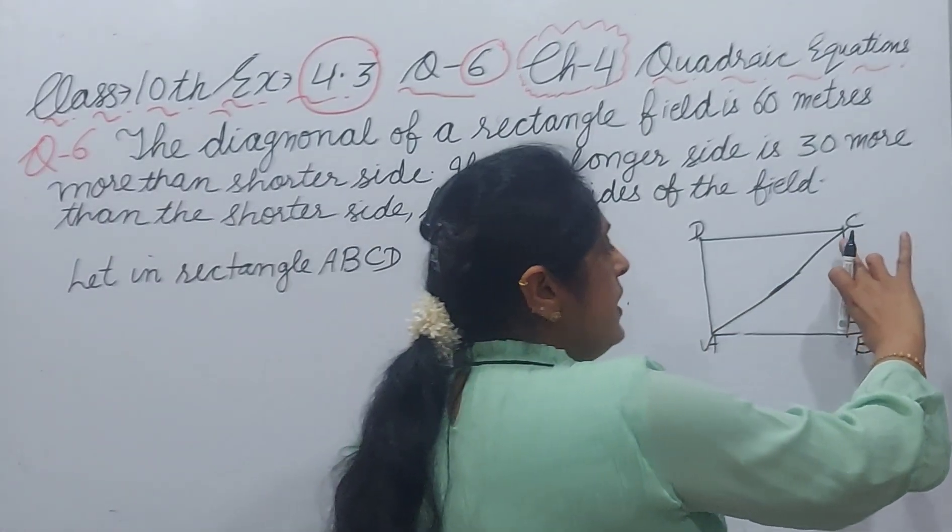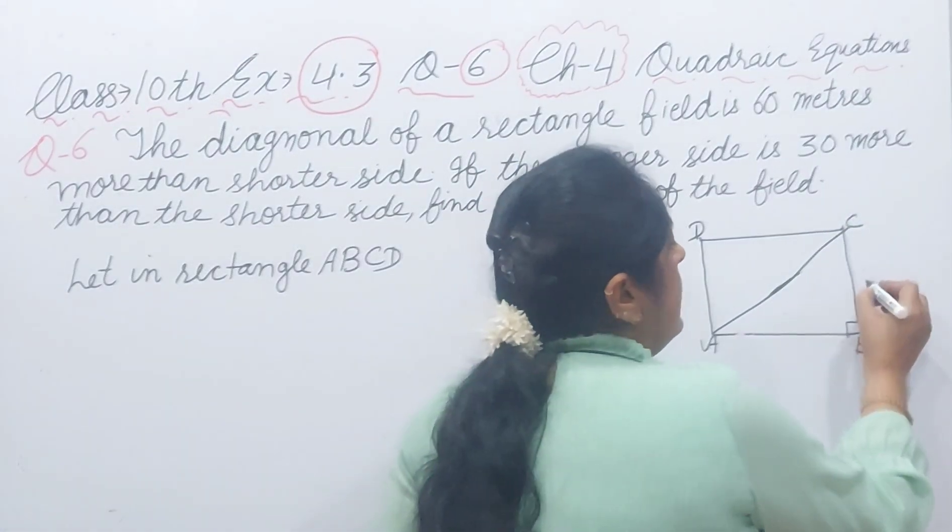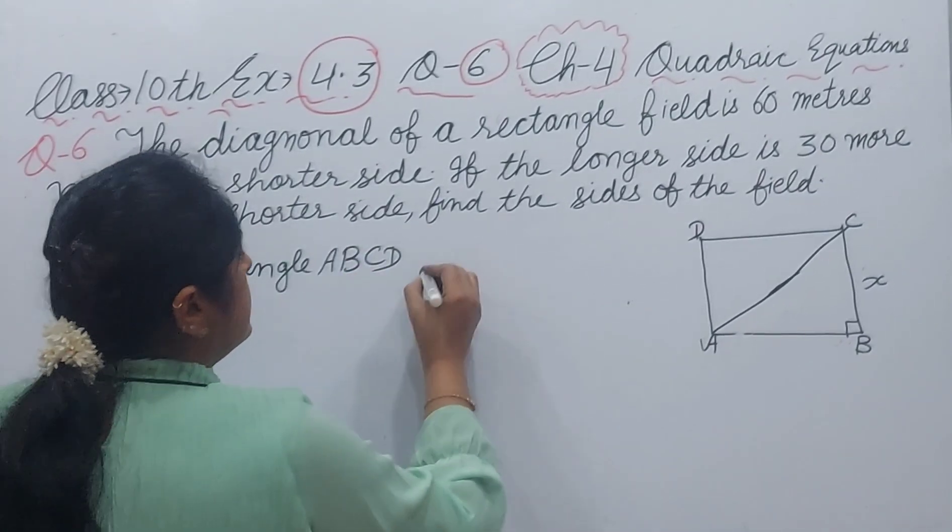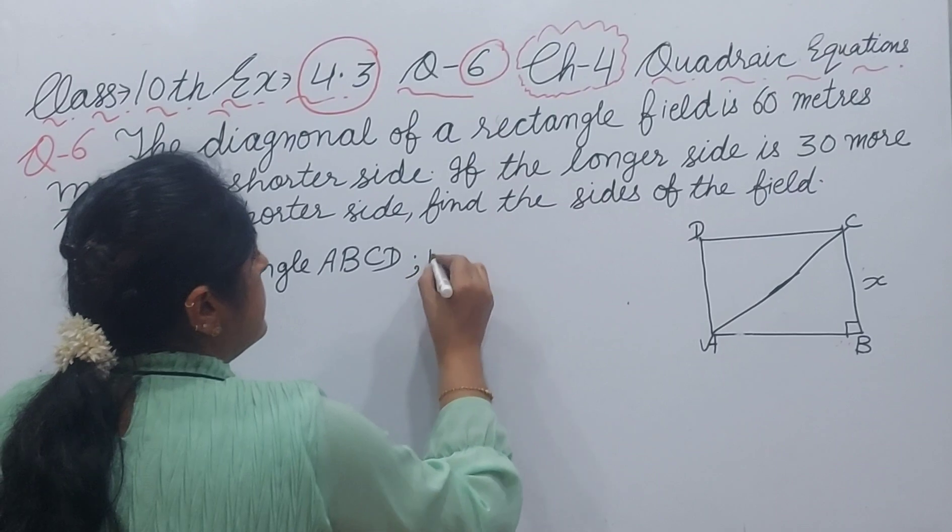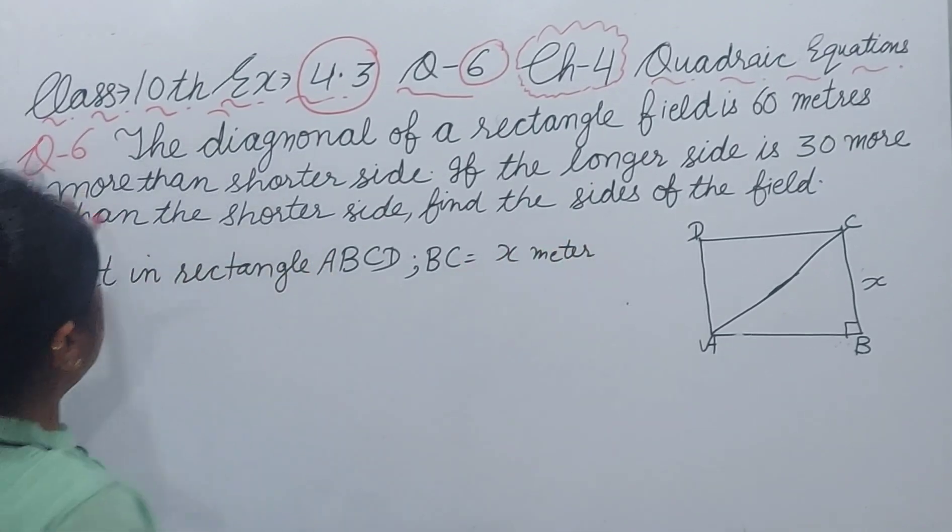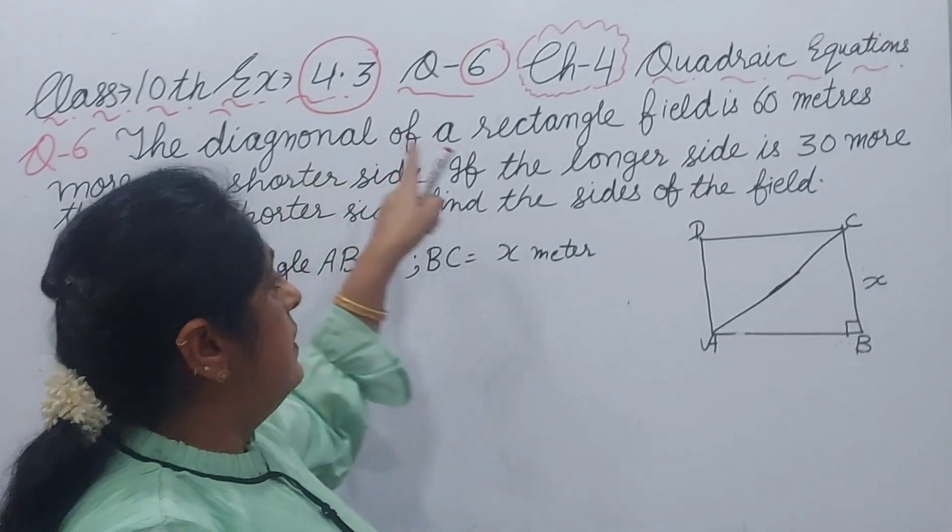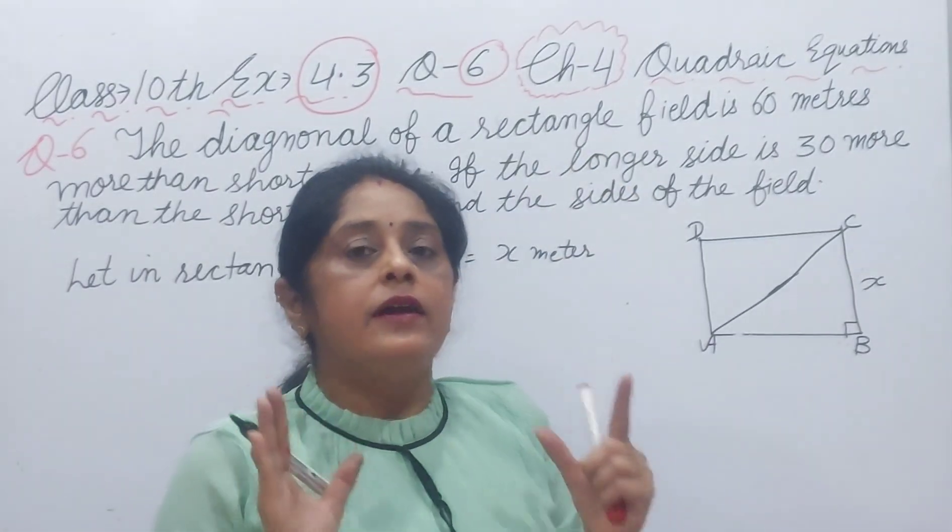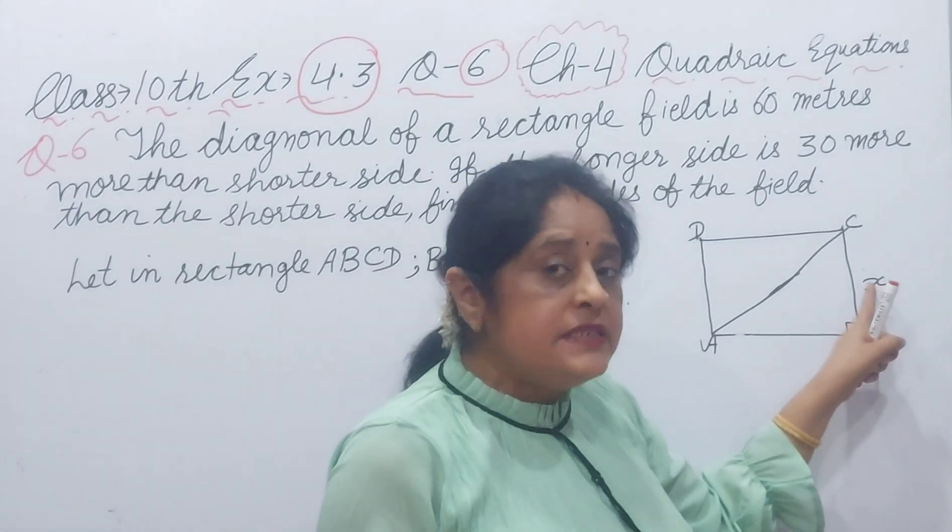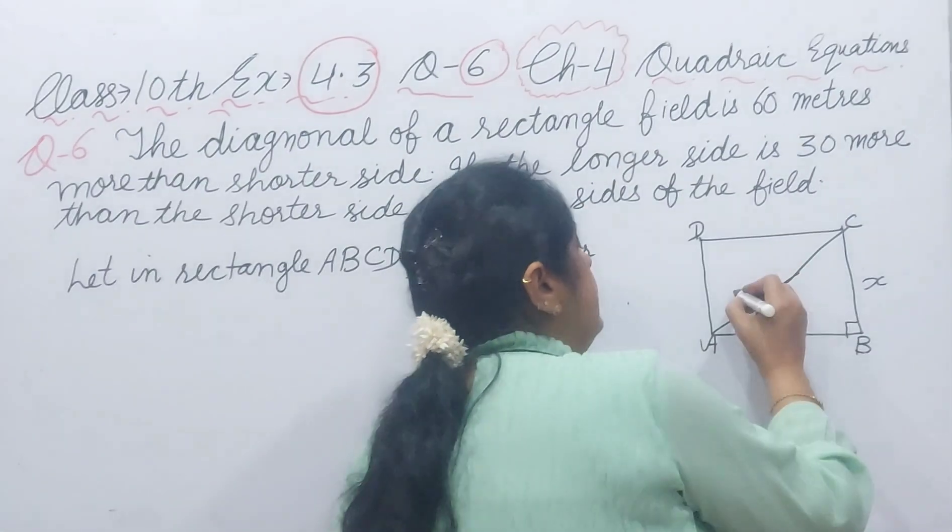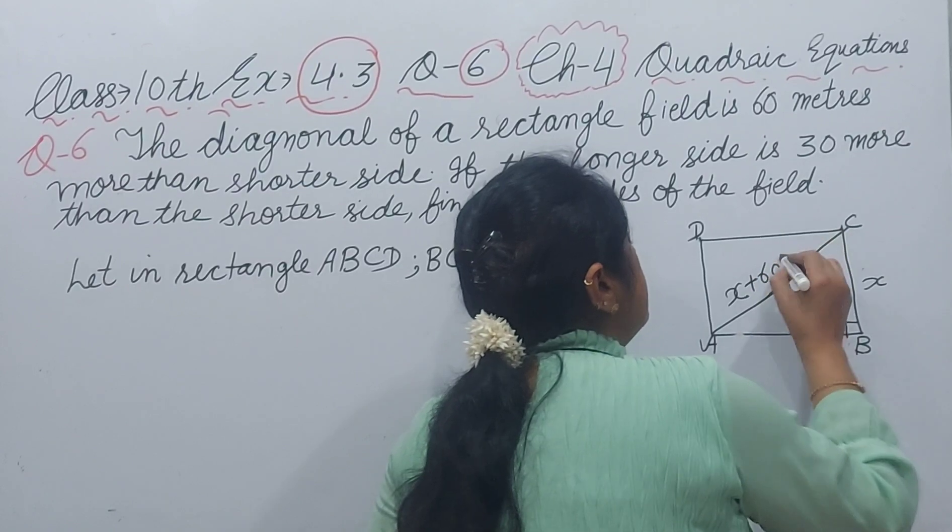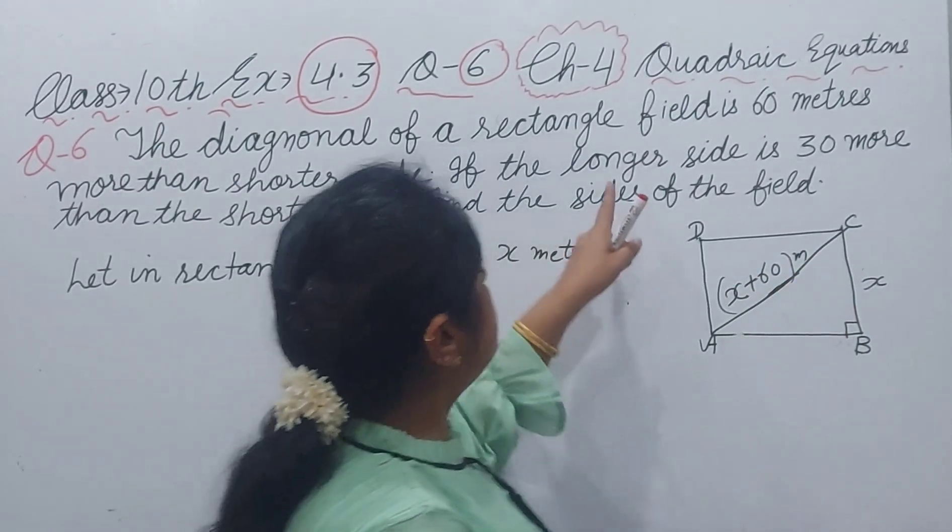AC is a diagonal. Let in rectangle ABCD, we assume BC is a shorter side and I assume as X. Let in the rectangle ABCD, BC is X meter. Now he is saying diagonal, rectangle ka diagonal 60 meter more hai, jyadha hai shorter side se. If we assume shorter side BC as X, then diagonal will be X plus 60 meter.